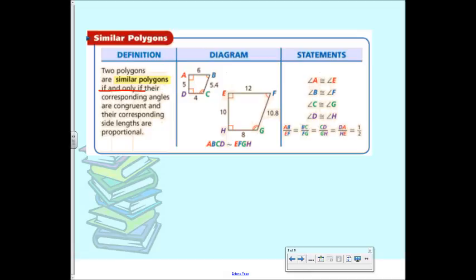So again, what do you do to six to get to 12? Times two. So your scale factor should be times two for all of them. Is five times two ten? Yes. Four times two eight? Yes. And 5.4, 10.8? Yes. So are these similar?